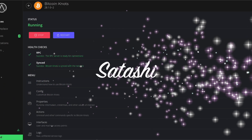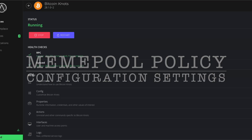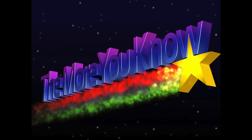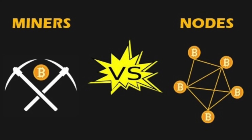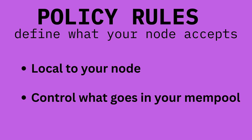Hi, I'm Satashi, and in this video we're going to walk through the mempool policy configuration settings in Bitcoin Knots so you can understand what they do and make more informed choices as a node runner. Bitcoin isn't decentralized because it's on a blockchain — it's decentralized because thousands of nodes independently verify the rules. There are two types of rules: consensus rules, which are non-negotiable and define what makes a block or transaction valid, and policy rules, which are up to you — they decide what your node relays and accepts into its mempool.